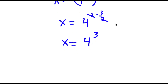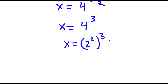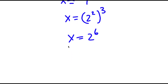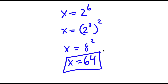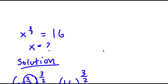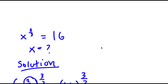Now 4 is the same thing as 2 squared. So I have x equal to 2 squared to the power of 3, which gives 2 to the power of 2 times 3, or 2 to the power of 6. This is the same thing as 2 to the power of 3, squared. 2 to the power of 3 is 8, so I have 8 squared, which equals 64. So x is equal to 64.